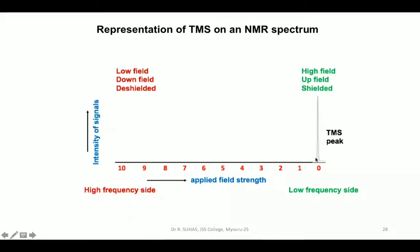For representation purposes, applied field strength is on the x-axis. Towards the TMS peak is the low-frequency side. As we move down from TMS, we go to the high-frequency side. The low-frequency side is called high-field, up-field, or shielded — meaning very low frequency, towards TMS, and more protected.